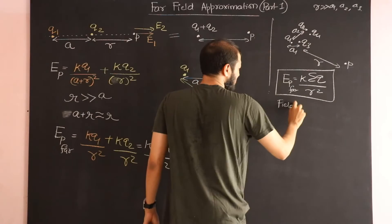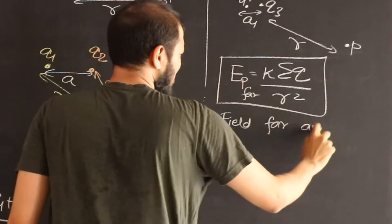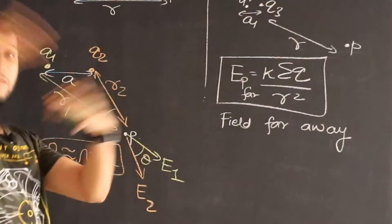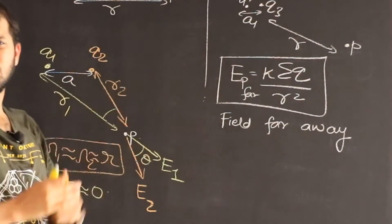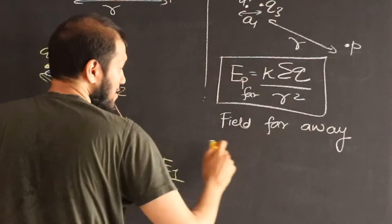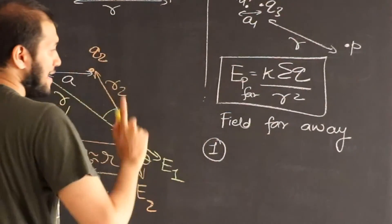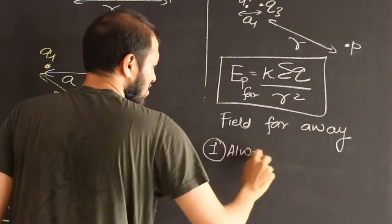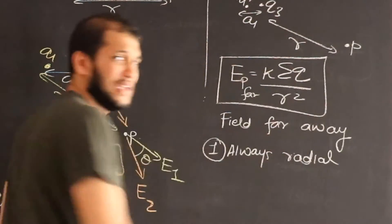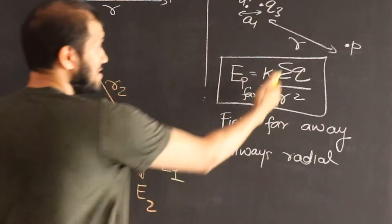Field far away. We can summarize. Now, due to any charge configuration, due to any number of charges, whatever could be the distances between them, it doesn't matter. What we can say is, one thing: it's always radial.